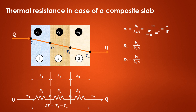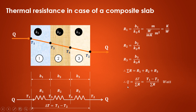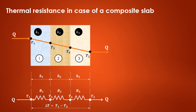The summation of resistances is R1 plus R2 plus R3, because all three resistances are in series. The use of this thermal resistance circuit is that we can easily find out the heat transfer rate as well as the interface temperatures. Q is equal to change in temperature divided by summation of resistances, so Q equals T1 minus T2 divided by R1 plus R2 plus R3.